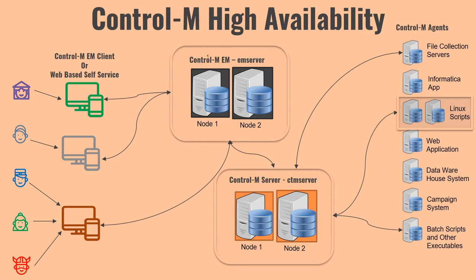In Control M high availability, you install Control M EM on multiple nodes — a minimum of two servers, with no maximum limit. For example, you can have Node 1 and Node 2, and these two servers act as a single server. They are going to have one logical IP and one logical hostname — in this case called 'EM Server'. Whenever Control M EM client interacts with the Control M EM component, it will interact using this logical IP or hostname.